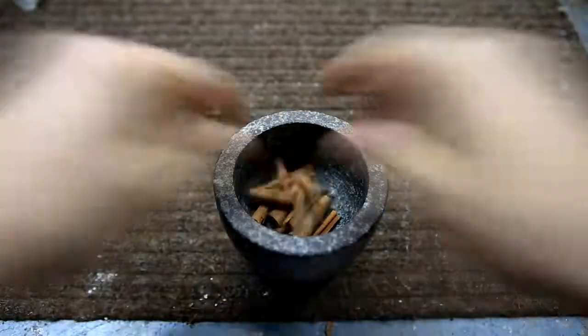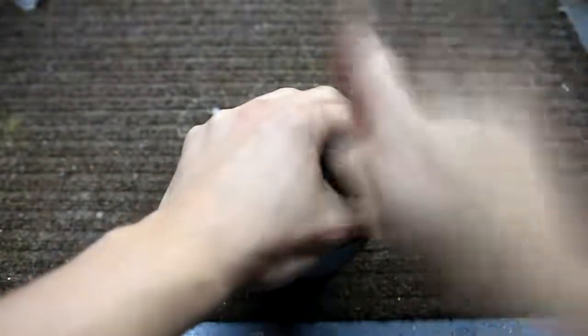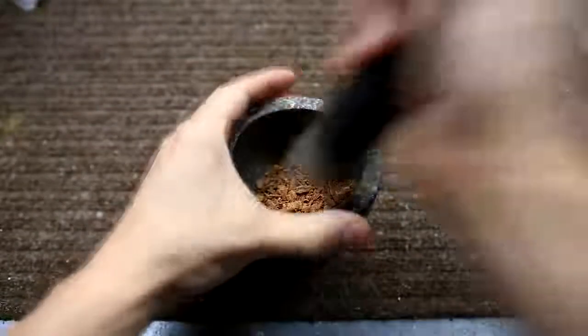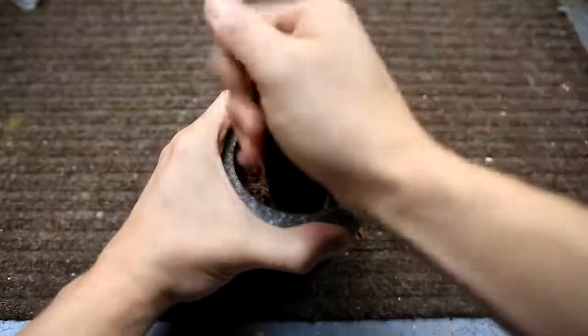Cinnamon sticks are broken into smaller pieces and placed into a mortar. Using the pestle the pieces are crushed into smaller bits. Keeping the bits moderately sized and not powderizing them keeps the foaming during the distillation to a minimum.